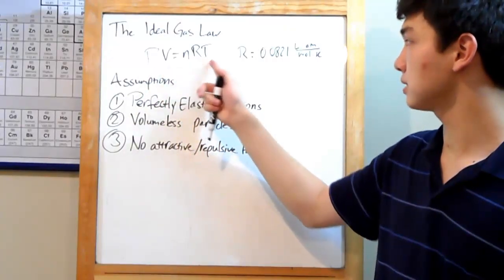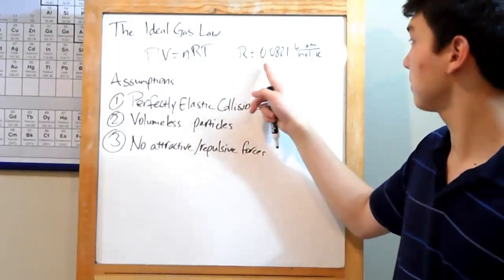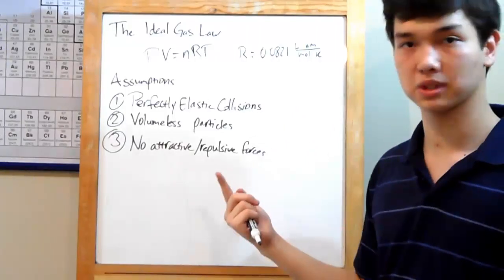P is pressure, V is volume, n is moles, T is temperature. R over here is a constant. It will always be the same: 0.0821 liter atmospheres per mole Kelvin.